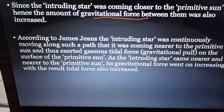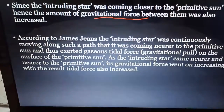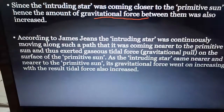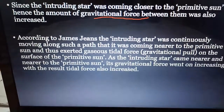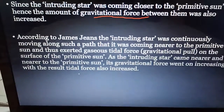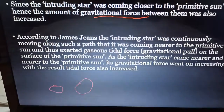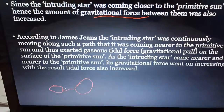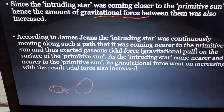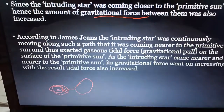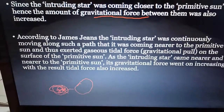The intruding star was continuously moving along a path bringing it nearer to the primitive sun, exerting a gaseous tidal force or gravitational pull on the primitive sun's surface. As the intruding star came nearer and nearer, its gravitational force went on increasing, and as a result the tidal force on the surface of the primitive sun also increased.